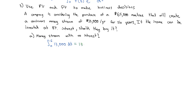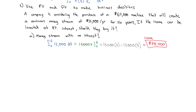That integral is just $13,000 times t, integrated from zero to six. So we plug in $13,000 times six and subtract $13,000 times zero. We find that the income from the machine is going to be $78,000. So this $65,000 investment is going to turn into $78,000 — it seems like a really good idea.